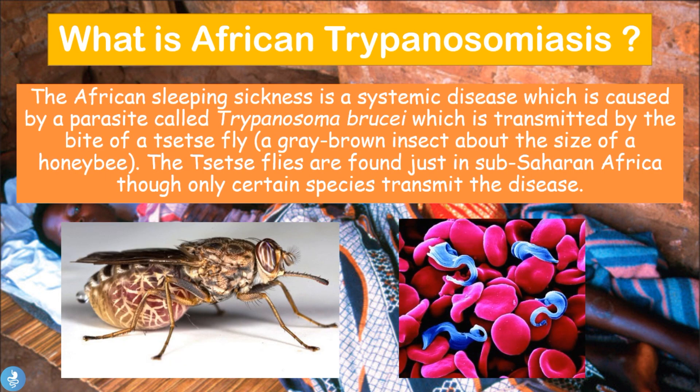So what is African trypanosomiasis? African sleeping sickness is a systemic disease caused by the parasite called Trypanosoma brucei, which is transmitted by the bite of the tsetse fly — a grey-brown insect about the size of a honeybee. The tsetse flies are found in sub-Saharan Africa, though only certain species transmit the disease.